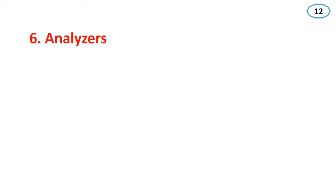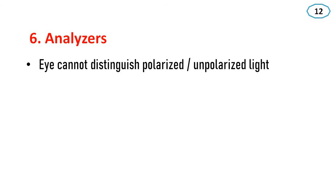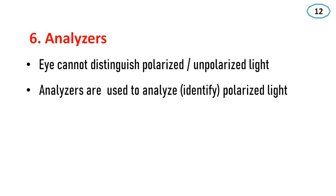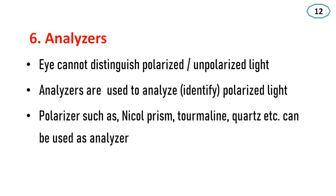The next case is analyzers. We can use the same material as both polarizer and analyzer. A light detector cannot distinguish polarized from unpolarized light, so we need a device to analyze or identify polarized light — this is known as an analyzer. Analyzers are used to analyze and identify polarized light. Polarizers such as Nicol prism, tourmaline crystal, and quartz can also be used as analyzers.